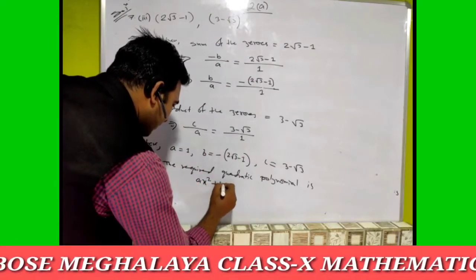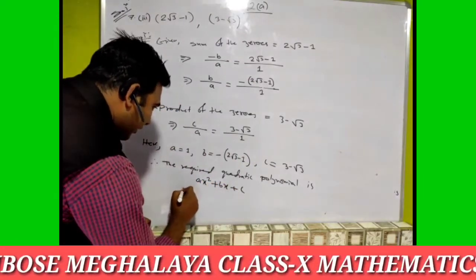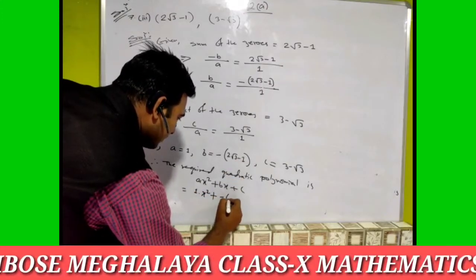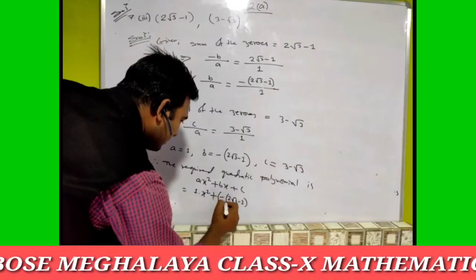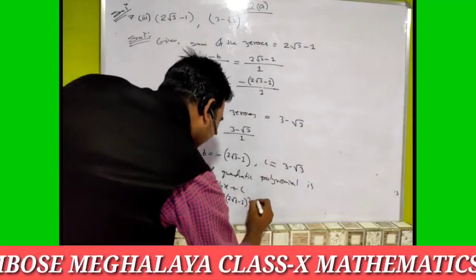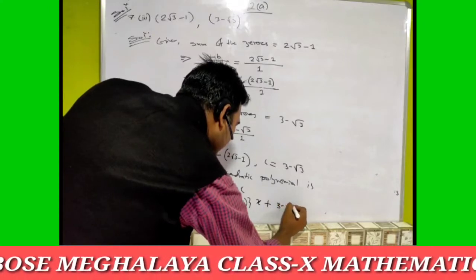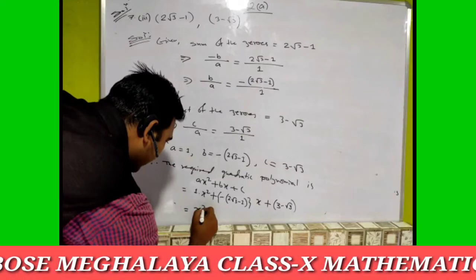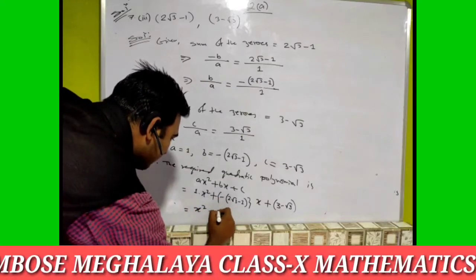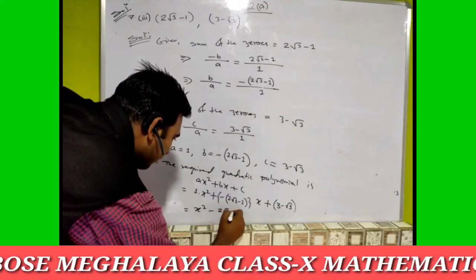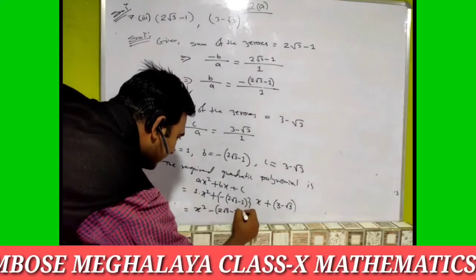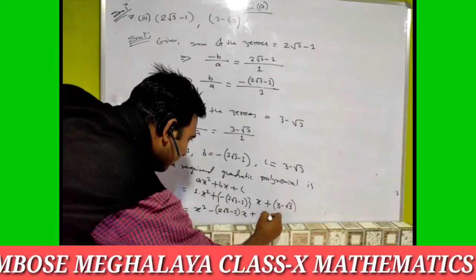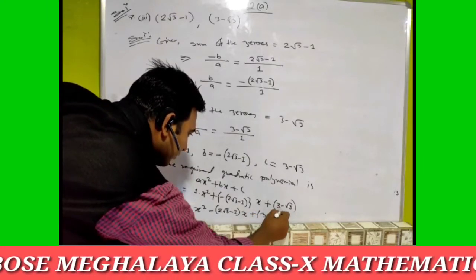Therefore the required quadratic polynomial is ax squared plus bx plus c. With a equal to one, b equal to minus two root three minus one, and c equal to three minus root three, the answer is: x squared minus two root three minus one times x plus three minus root three.